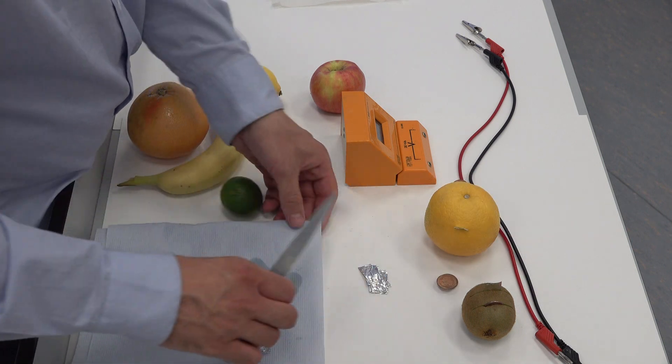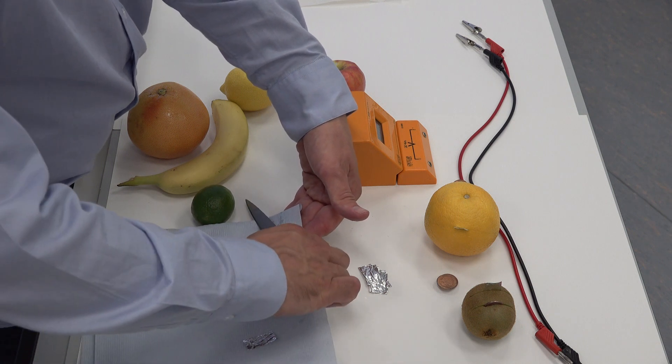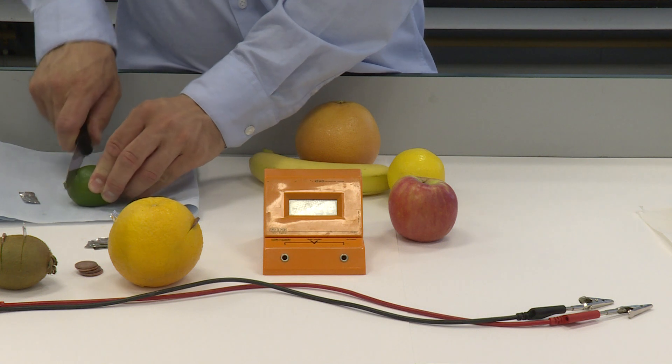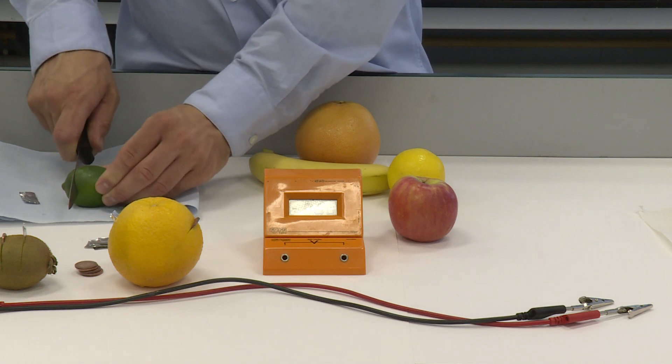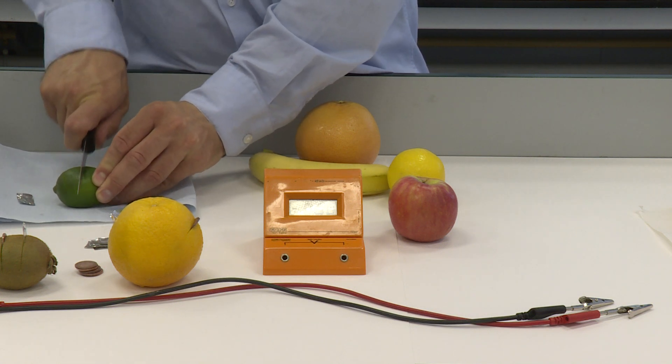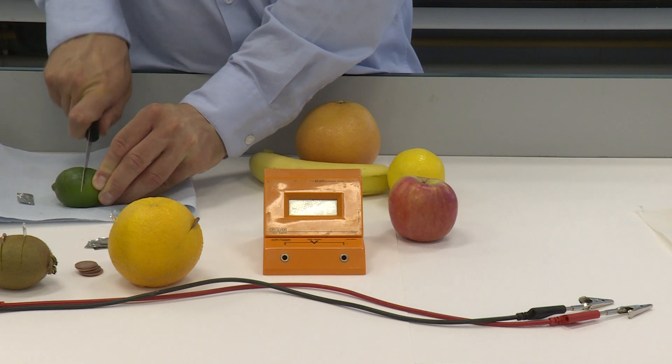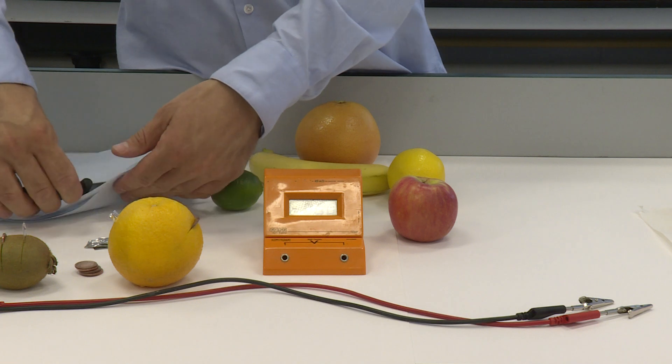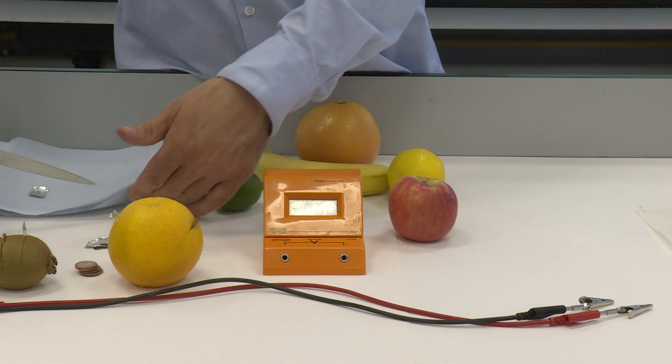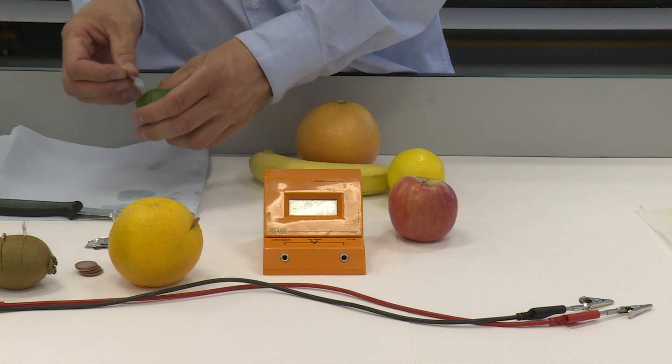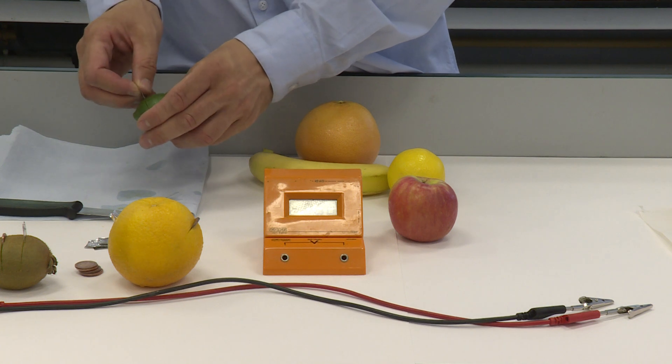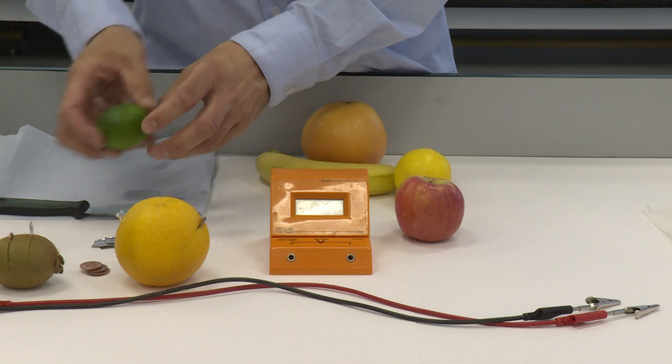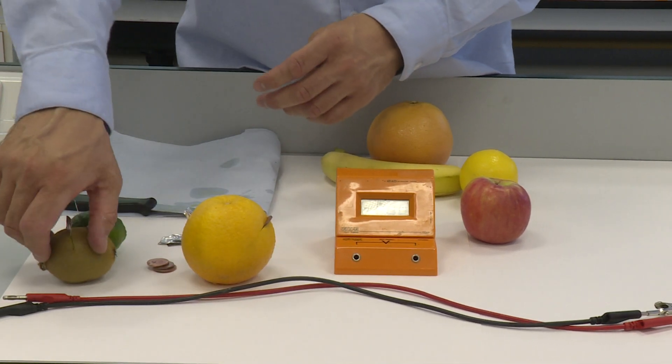Let's do the lime next. Make sure your knife is nice and clean. Do it very carefully please. Always keep your fingers well out of the way and keep the fruit flat on the table. If you're unsure, please make sure that you have adult supervision as well.